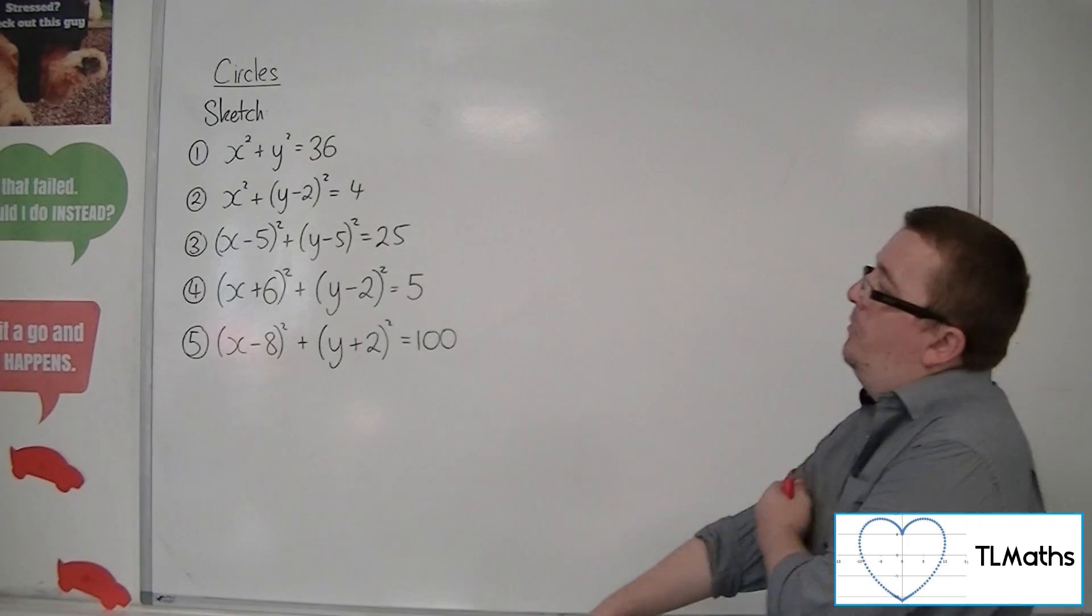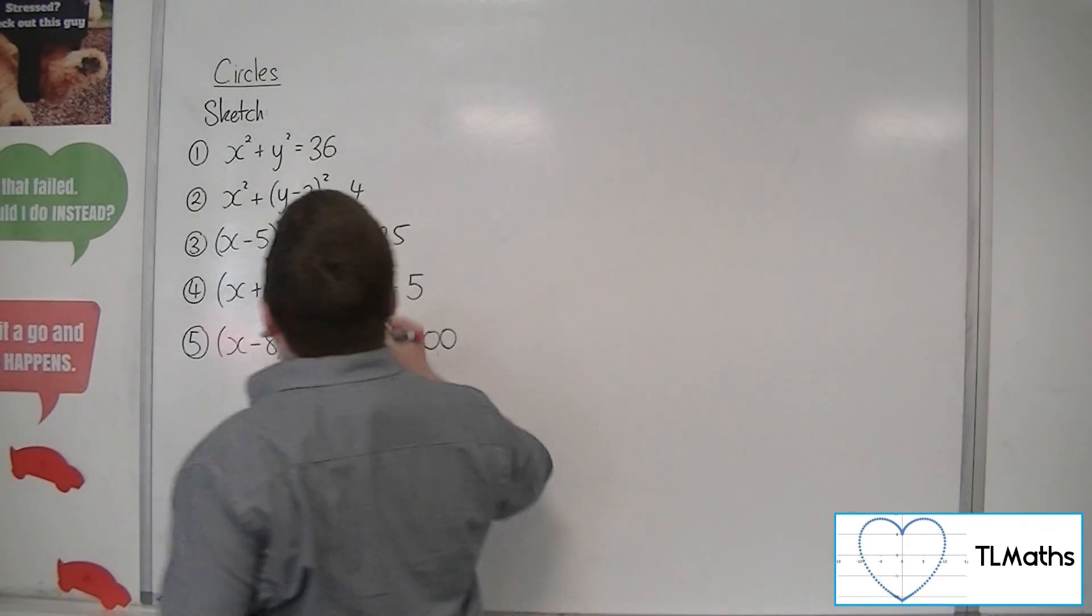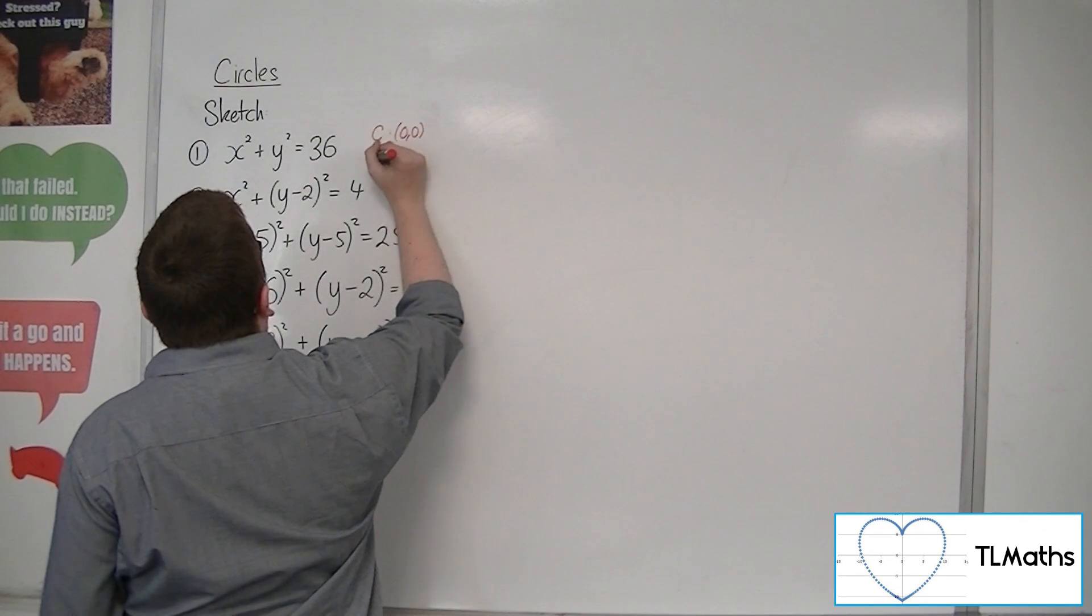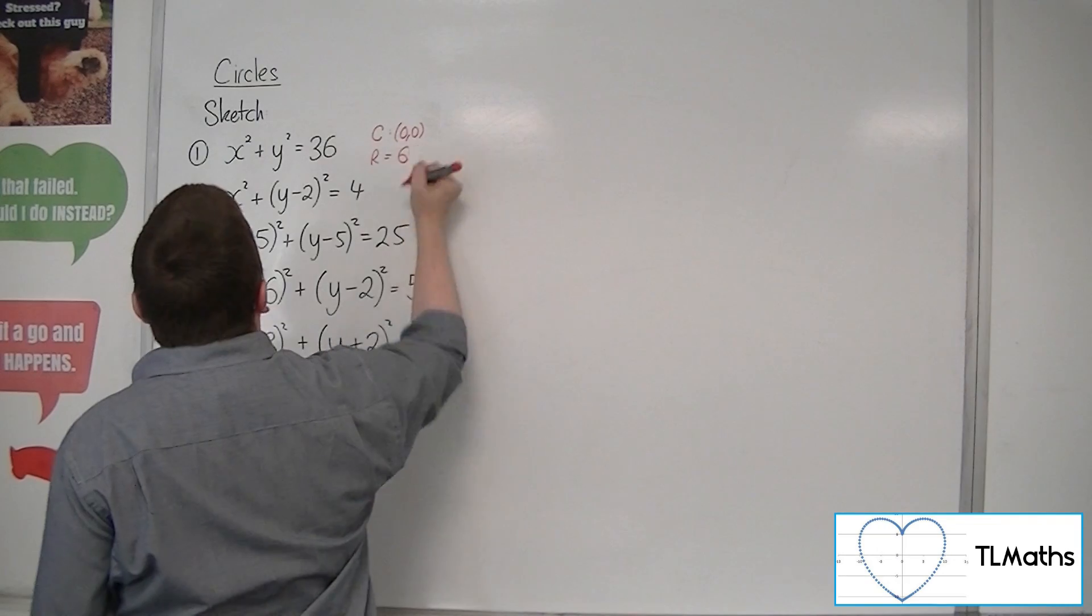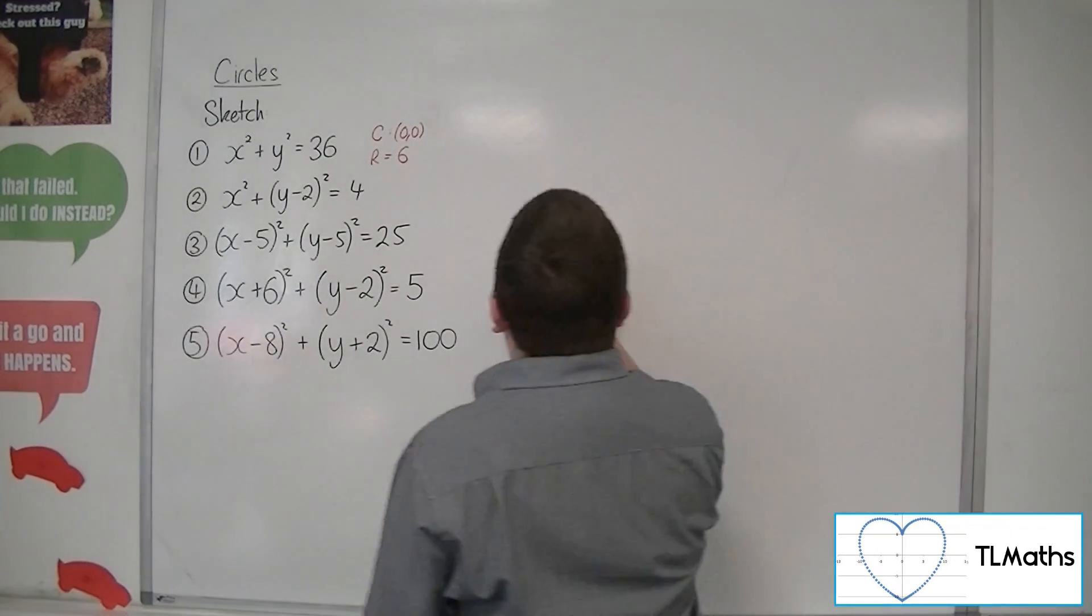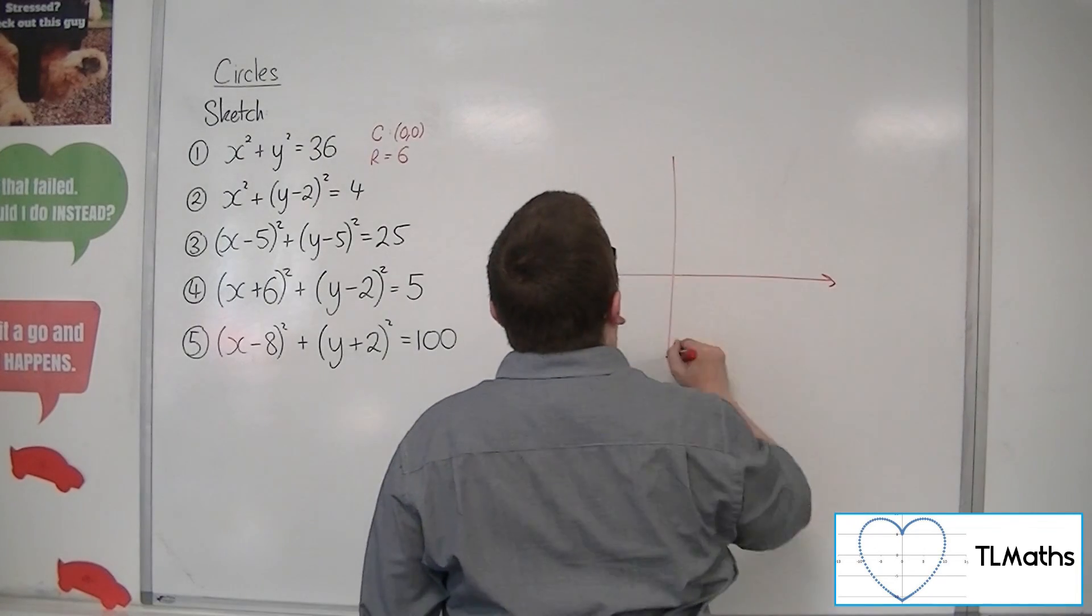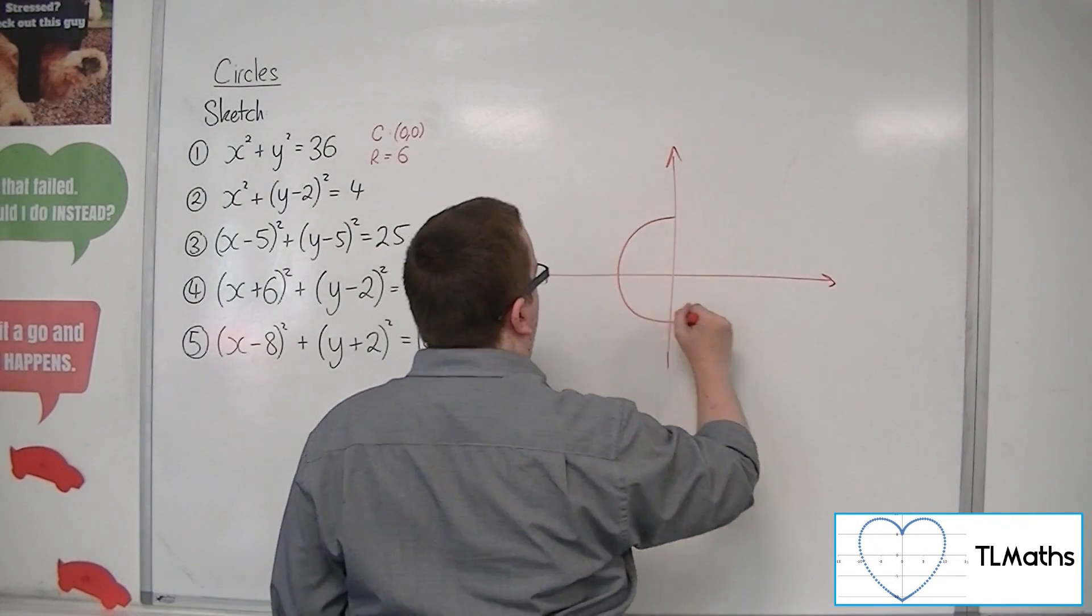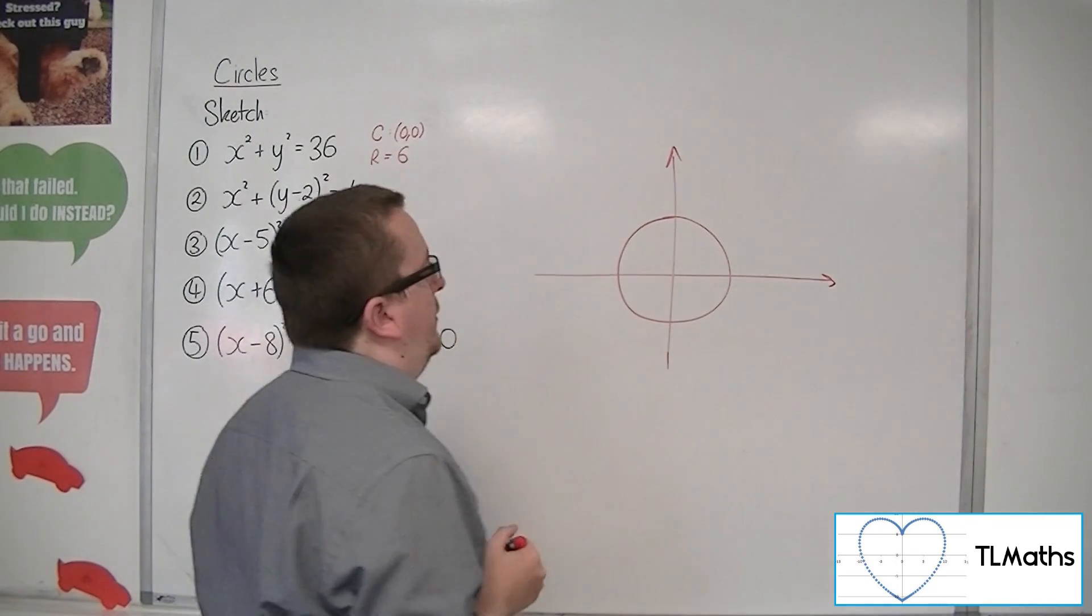We've got x squared plus y squared equals 36. So it might make sense to write down the centre, which is going to be 0, 0. And the radius is going to be the square root of 36, so 6. So, what's this going to look like? Well, this is going to be a circle, centred at the origin, with radius 6.